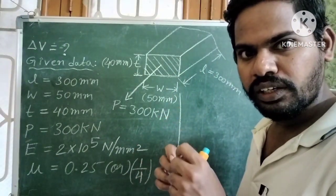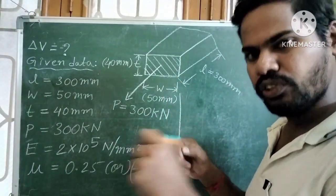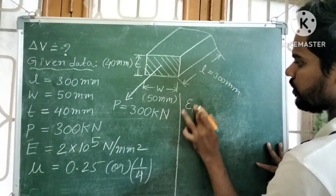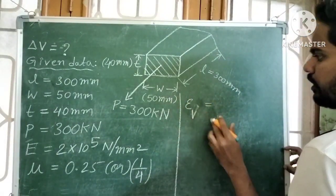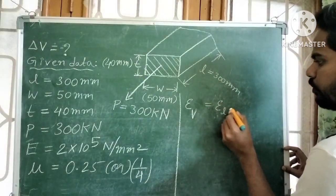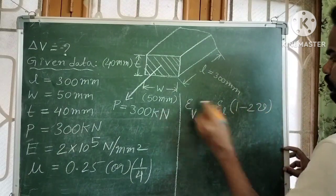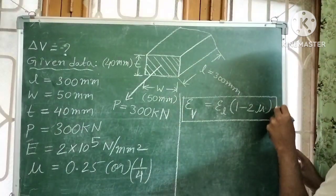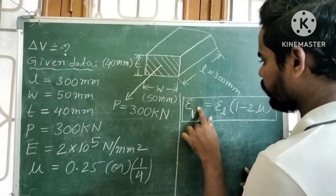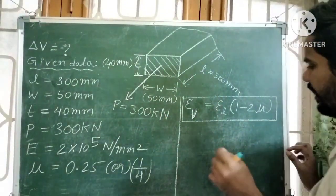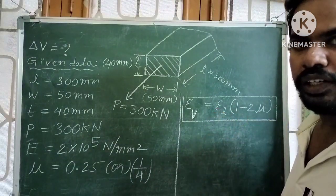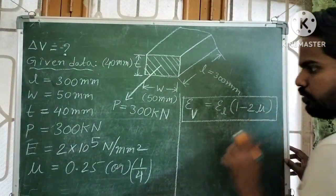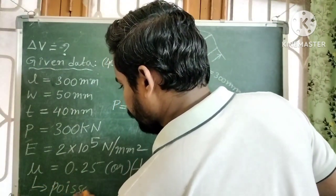So this is the formula for volumetric strain. Volumetric strain εᵥ is equal to longitudinal strain into (1 − 2μ), where μ is Poisson's ratio. This formula applies for a rectangular bar when it is subjected to axial pull along the longitudinal direction.